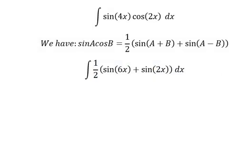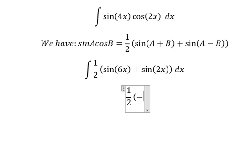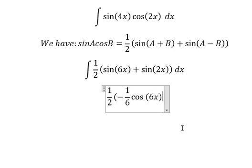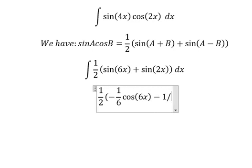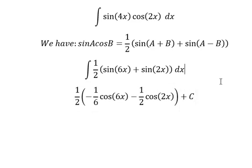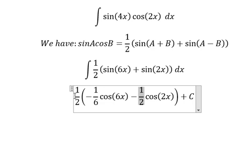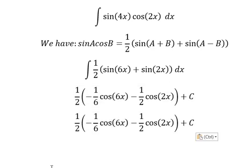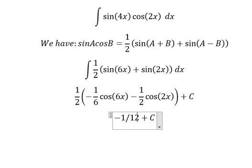And now we have the final answer. The integration of this one: we have negative 1 over 6 cosine 6s. The next one we have negative 1 over 2 cosine 2s. And this is the final answer — 1 over 2 multiplied by this one and this one. All right.